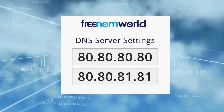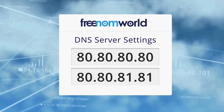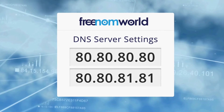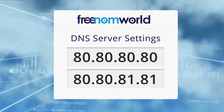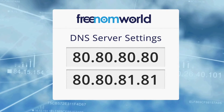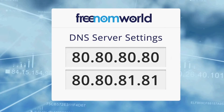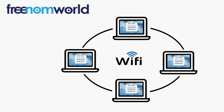The Freedom World DNS IP addresses are 80.80.80.80 and 80.80.81.81. It is important to ensure that all users of your local area network are automatically given the Freedom World DNS IP addresses each time they connect to your network.